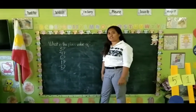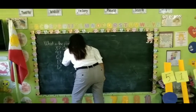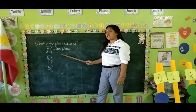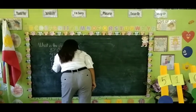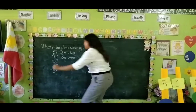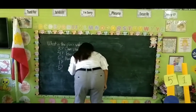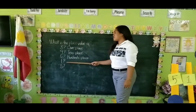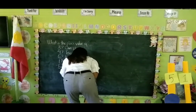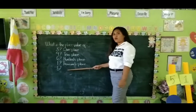Based on the abacus, let me explain to you: 3 is under the ones place; 4 is under the tens place; 6 is under the hundreds place; 1 is under the thousands place; and 5 is under the ten thousands place.